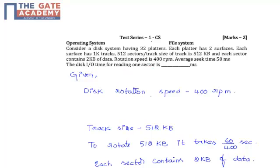Given disk rotation speed as 400 RPM, that is 400 rotations per minute. For 60 seconds, 400 rotations. So for one rotation, how much time will it take? That is 60 by 400 seconds for one rotation.